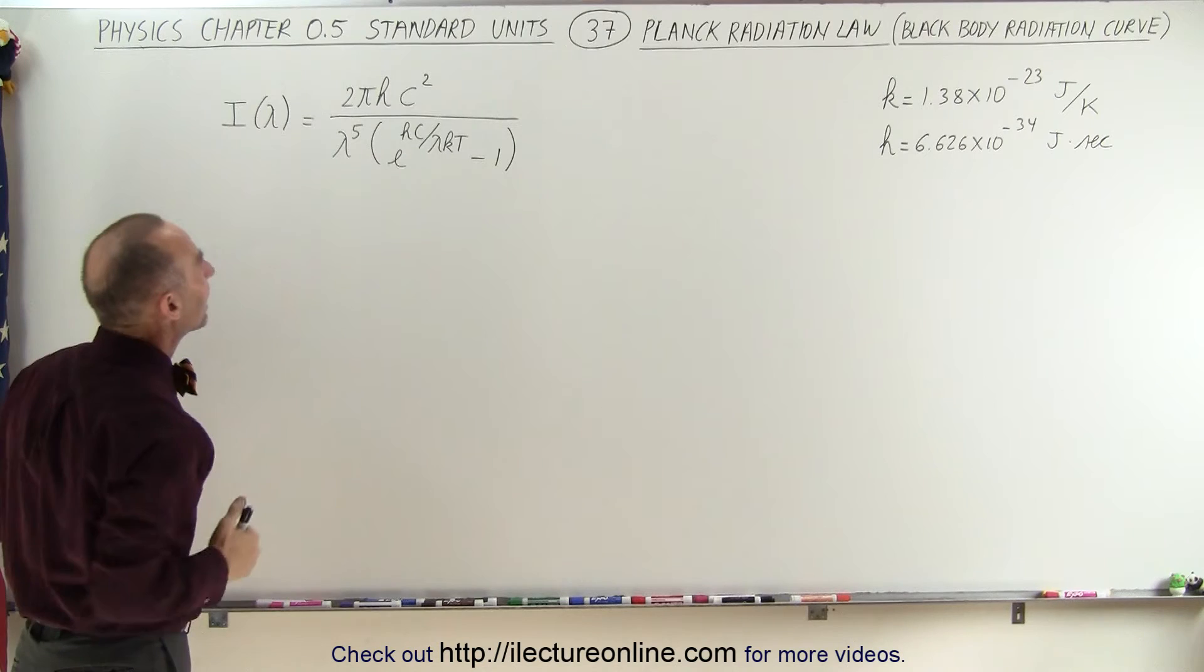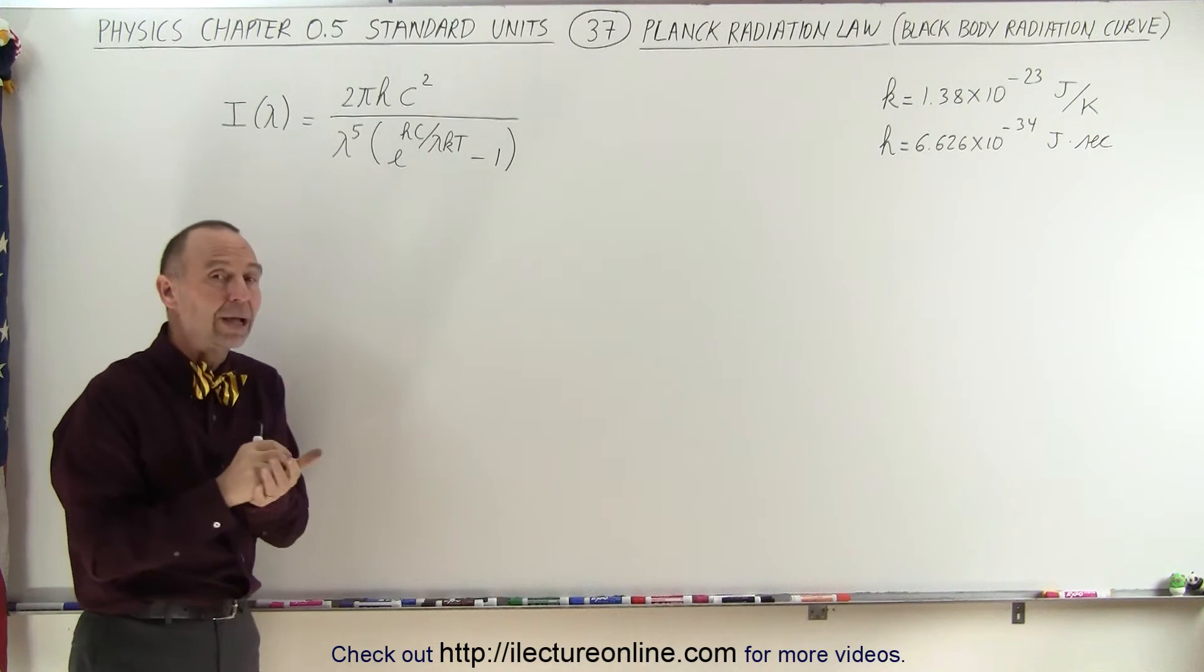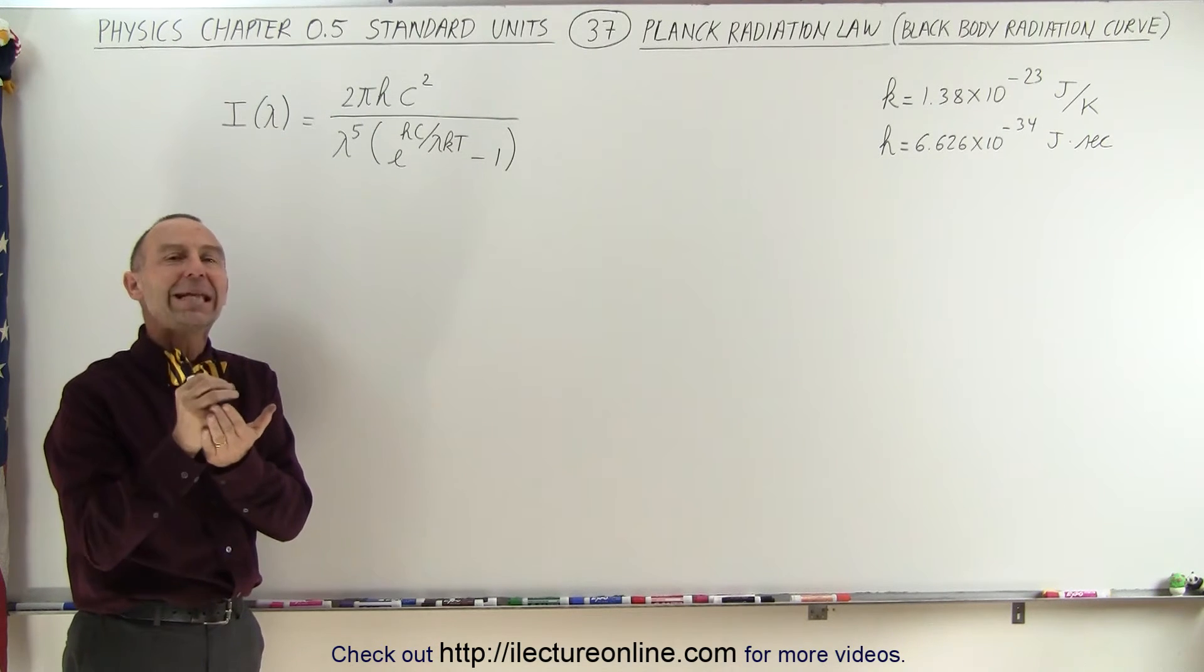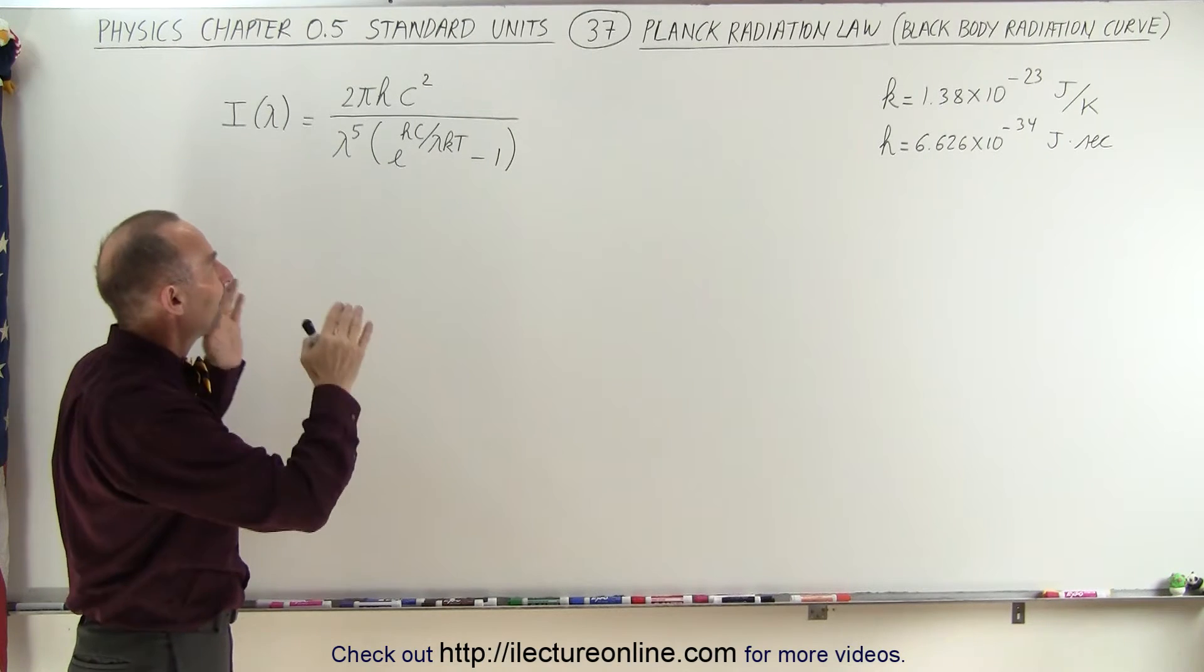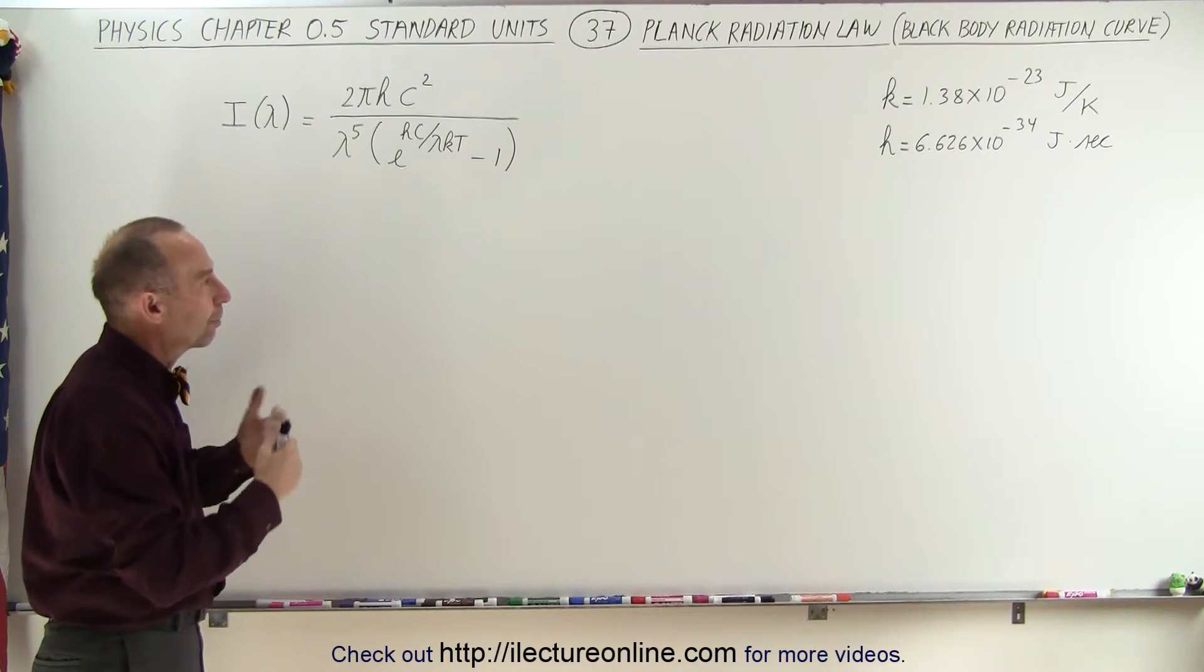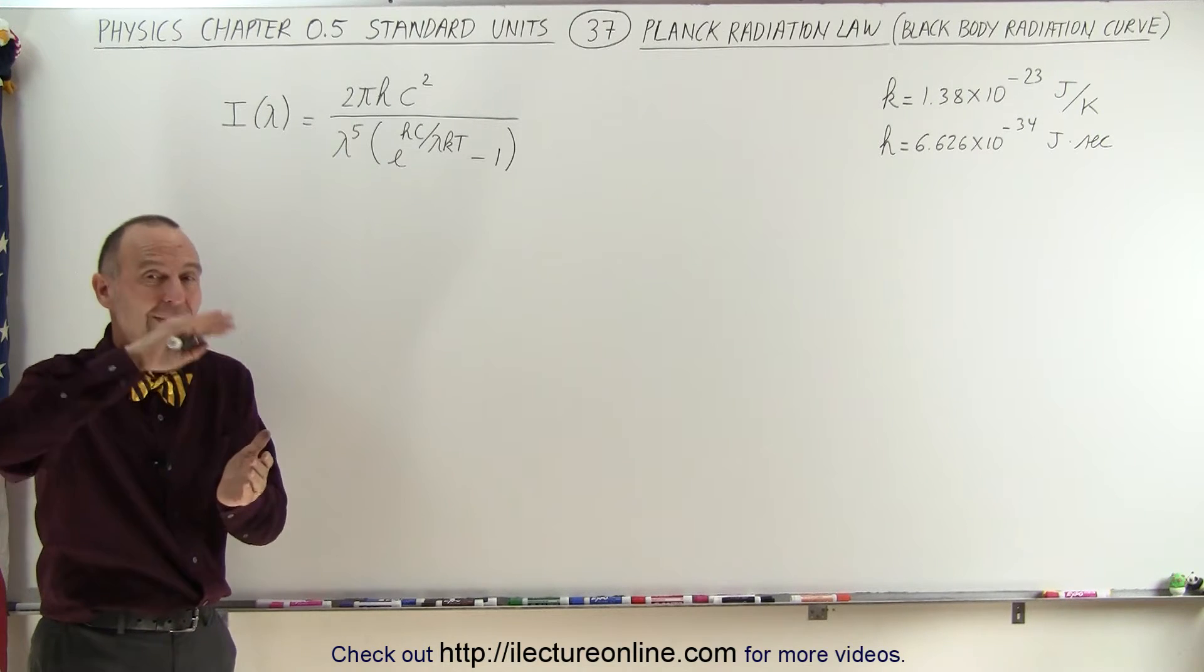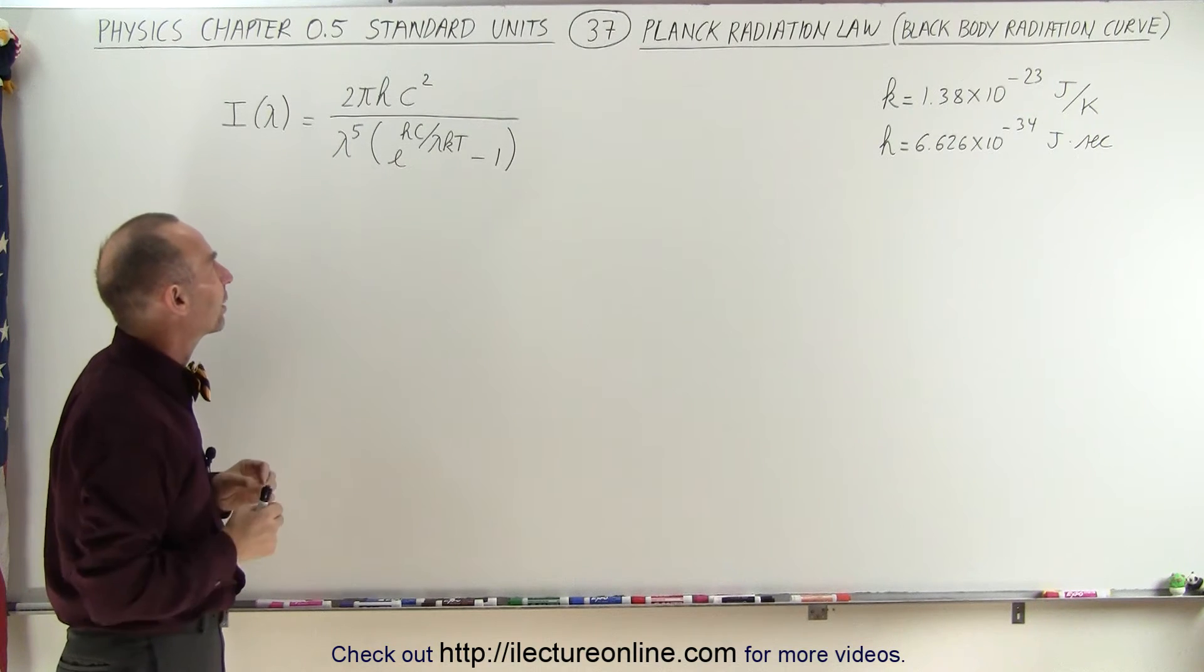It is quite a complicated equation, but it does describe the intensity of the radiation per unit wavelength of a black body in space, or a black body in any situation. It's what the radiation curve looks like from a particular object.